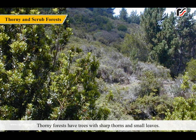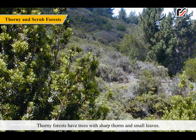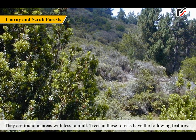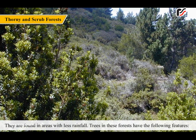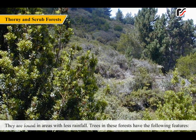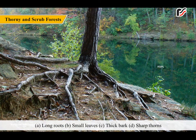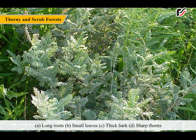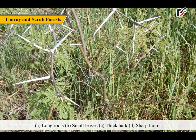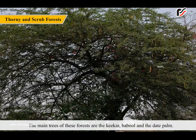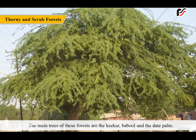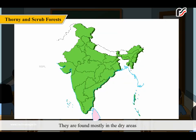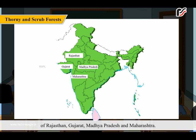Thorny forests have trees with sharp thorns and small leaves, and are found in areas with less rainfall. Trees in these forests have: a. Long roots, b. Small leaves, c. Thick bark, and d. Sharp thorns. The main trees are keekar, babool and the date palm. They are found mostly in the dry areas of Rajasthan, Gujarat, Madhya Pradesh and Maharashtra.